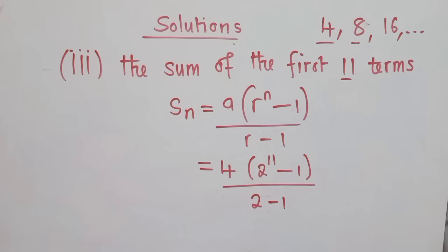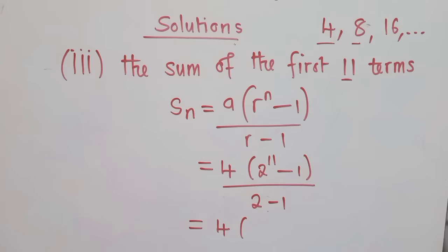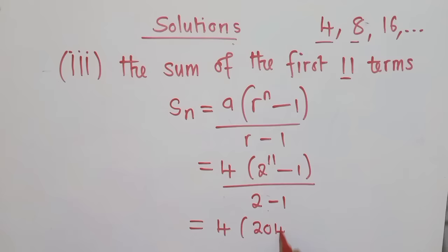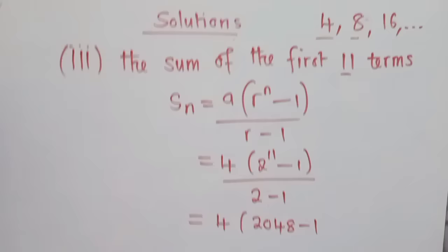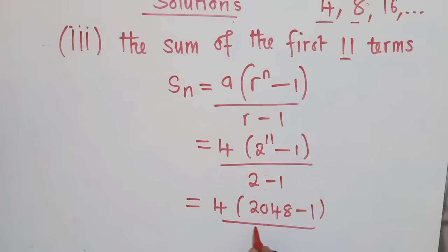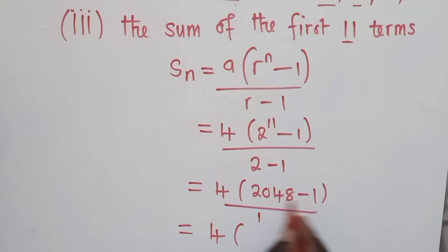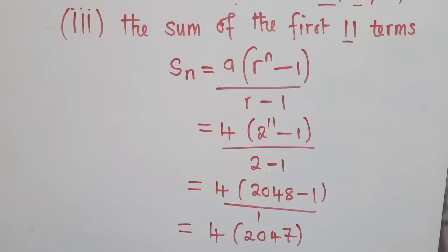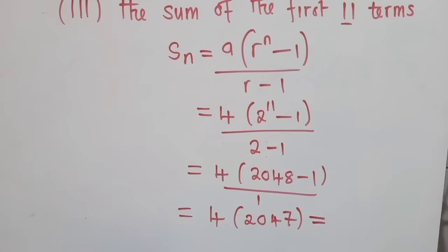When we simplify here, we're getting 4. And when we say 2 to the power 11, it's giving us 2,048 minus 1. When we simplify, we're getting 1. So we have 4 here. And when we simplify inside here, when we say minus 1, we're getting 2,047. Divide by 1 here, the answer will just be the same. Which is equal to when we multiply times 4, because these brackets mean multiplication. 4 times what is inside, that is 8,188. This is our answer.